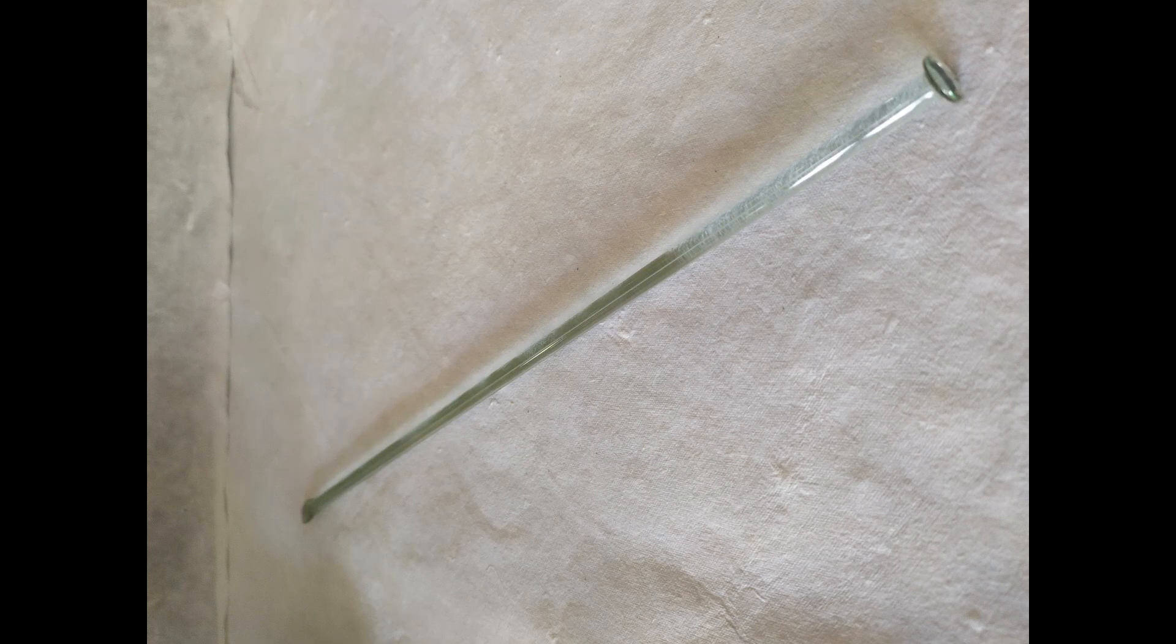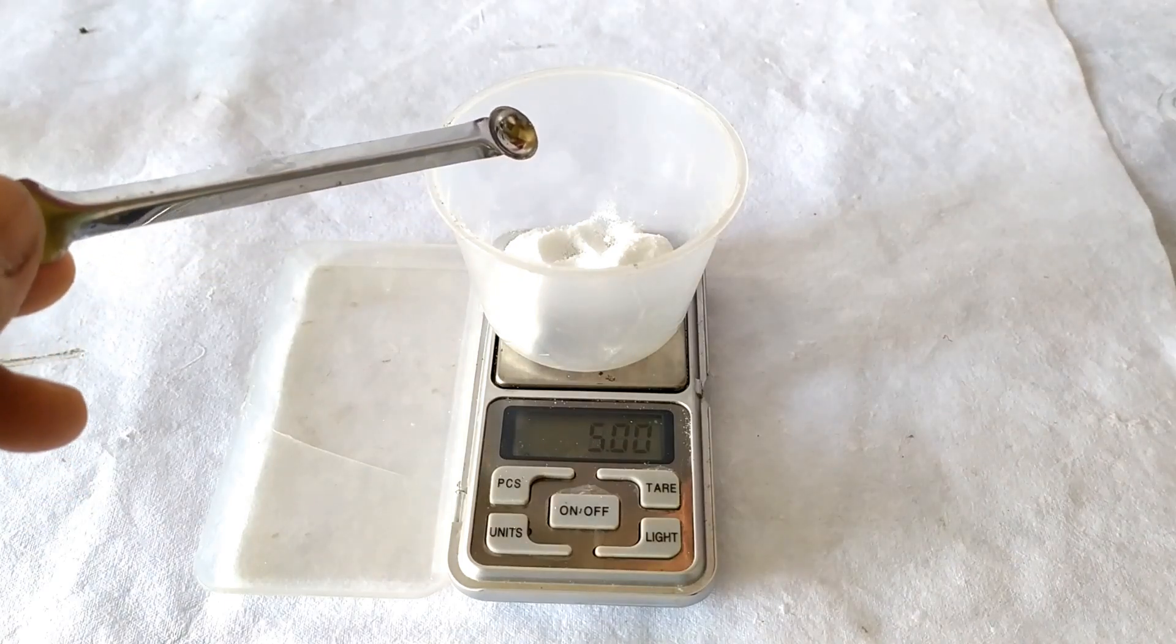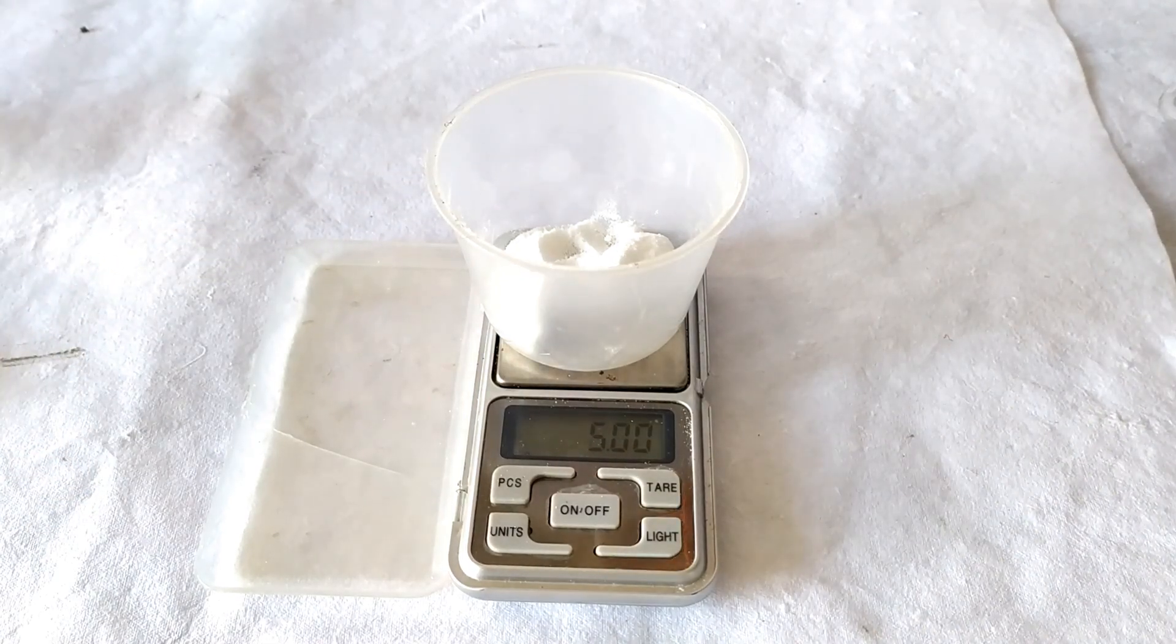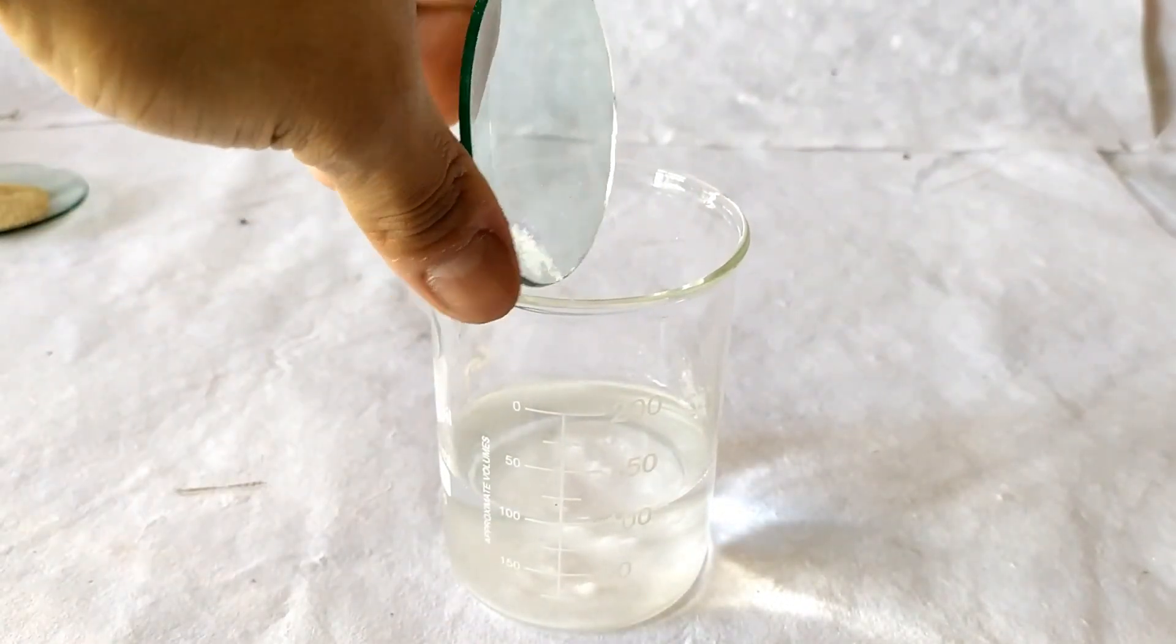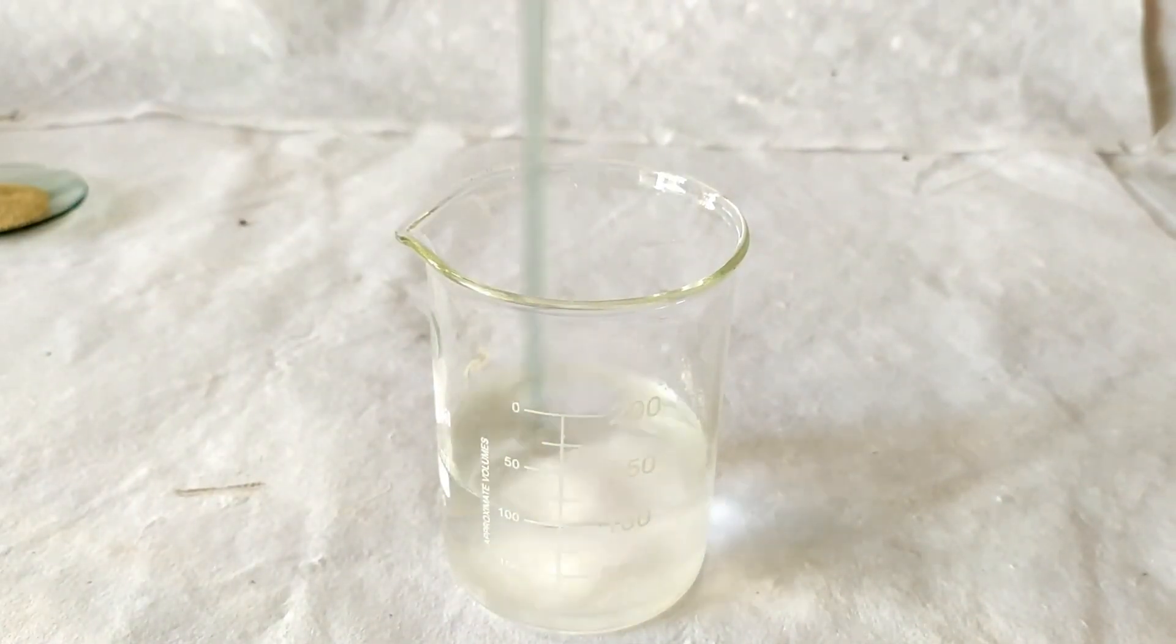To begin the experiment, prepare 5% glucose solution by dissolving 5 grams of glucose powder in 100 ml of boiled and cooled water in a beaker.